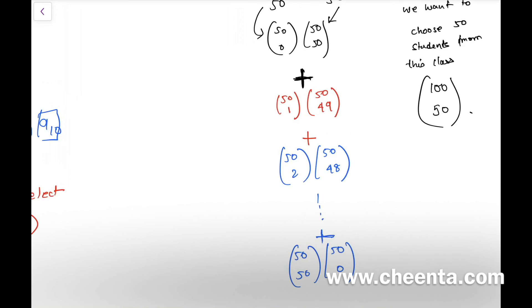So this sum is the same as this one: (100 choose 50). It's only saying it differently.